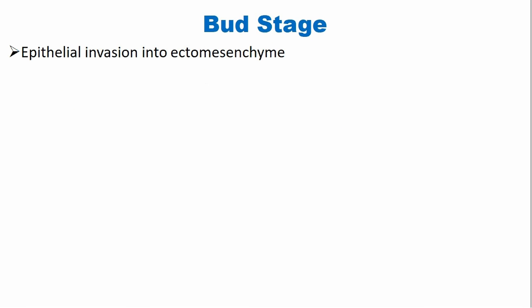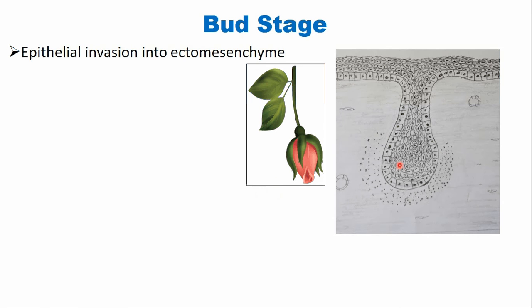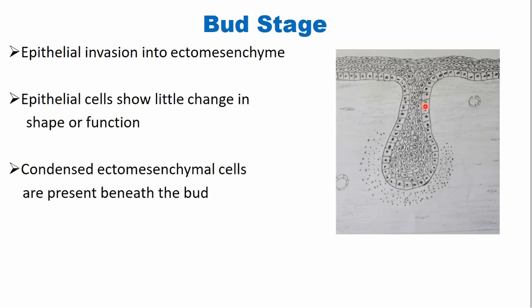In the bud stage, the epithelium further invades into the ectomesenchyme and assumes a bud-shaped appearance. You can see the dental lamina — the anterior part of the dental lamina forms a bud-shaped appearance. The epithelial cells show little change in shape or function as compared to the dental lamina cells, so the cells are poorly differentiated. In the mesenchyme, there is condensation — the connective tissue cells are densely surrounding this bud. The epithelium and connective tissue are separated by a basement membrane.